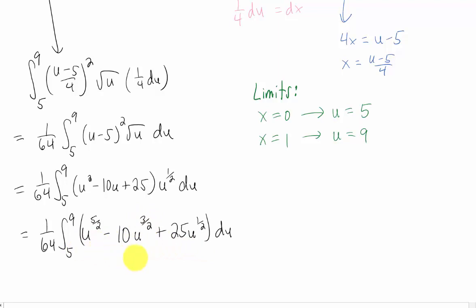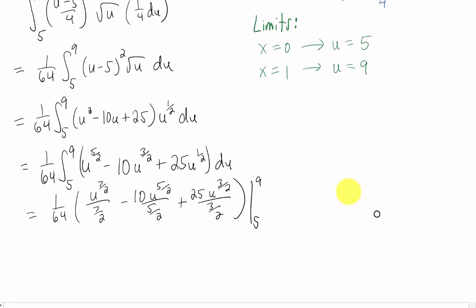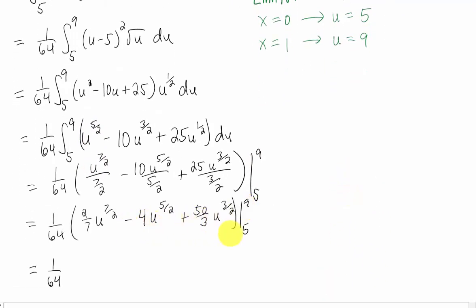And now we have something that we can use the power rule on. Adding 1 to each one of these powers, and then dividing by that power gives us this, which we can simplify a bit. Then we just need to plug in our upper and lower limits of integration.